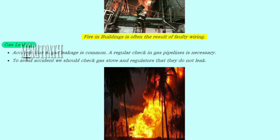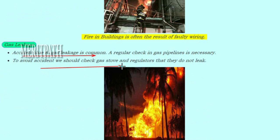Gas leakage: accidents due to gas leakage are common. A regular check on gas pipelines is necessary. Here you can see an image of a gas line burst causing a fire accident. To avoid such accidents, we should check gas stoves and regulators regularly, and gas pipelines must also be checked carefully.